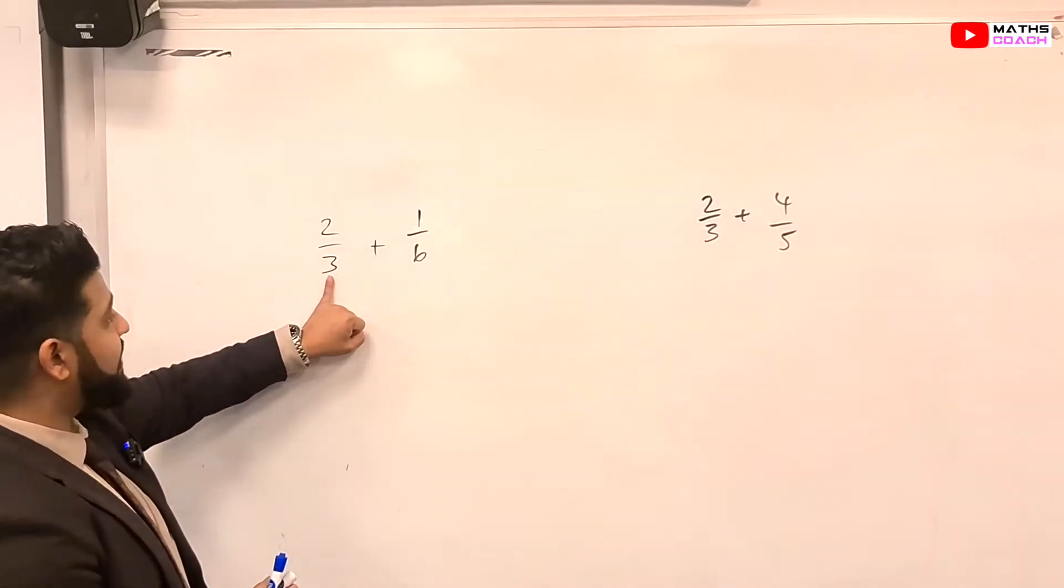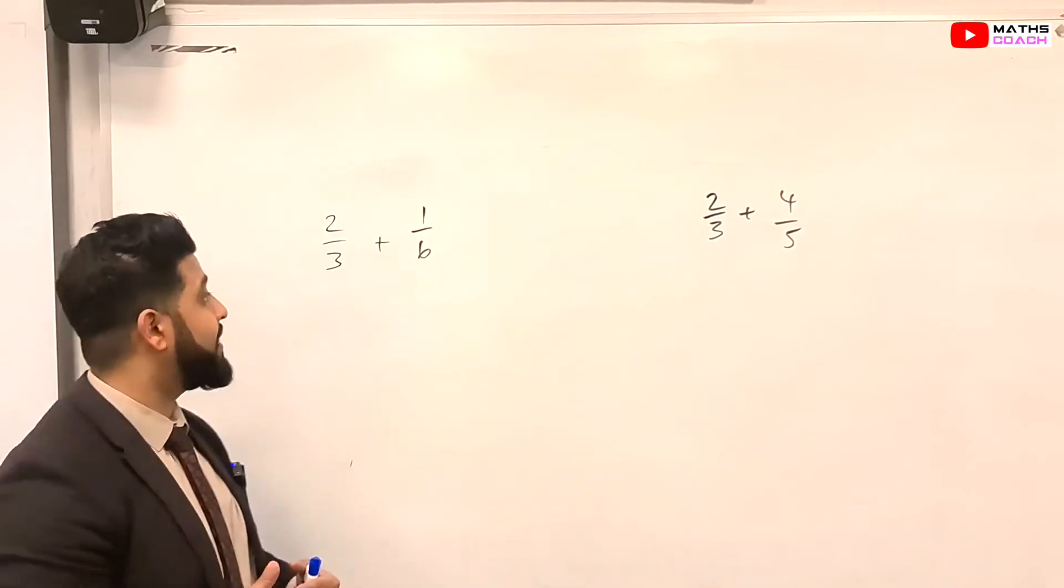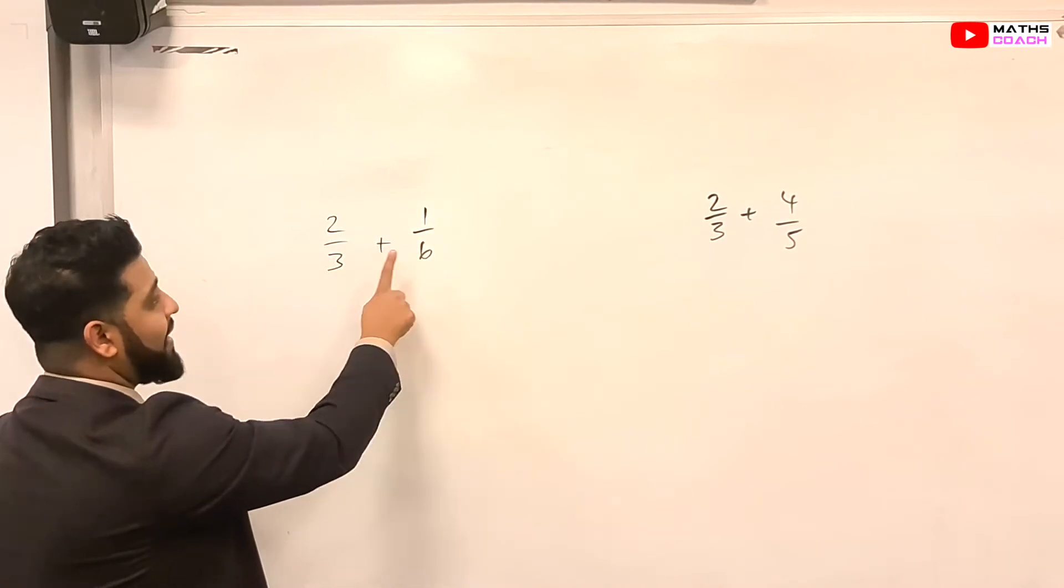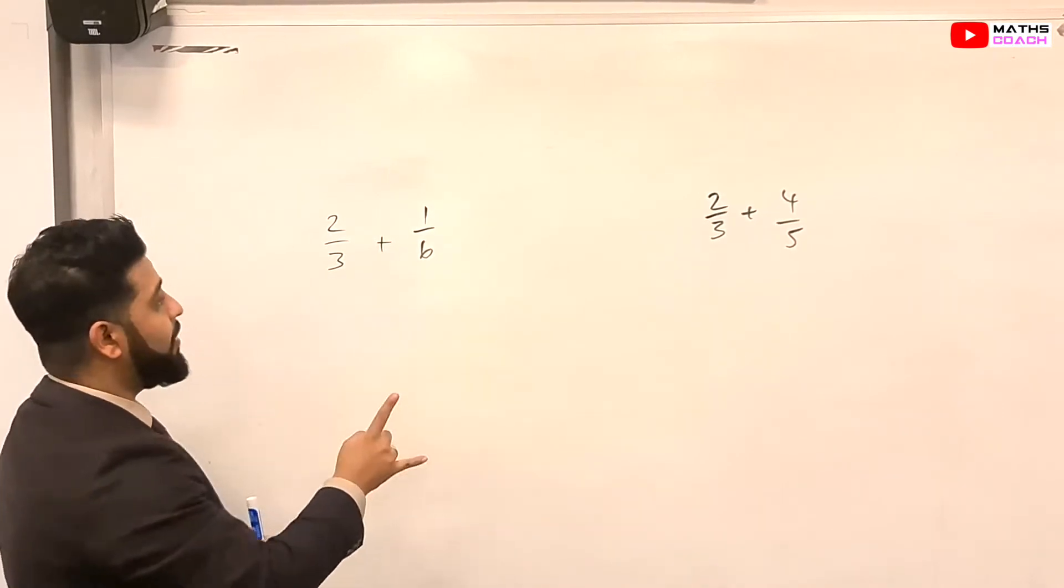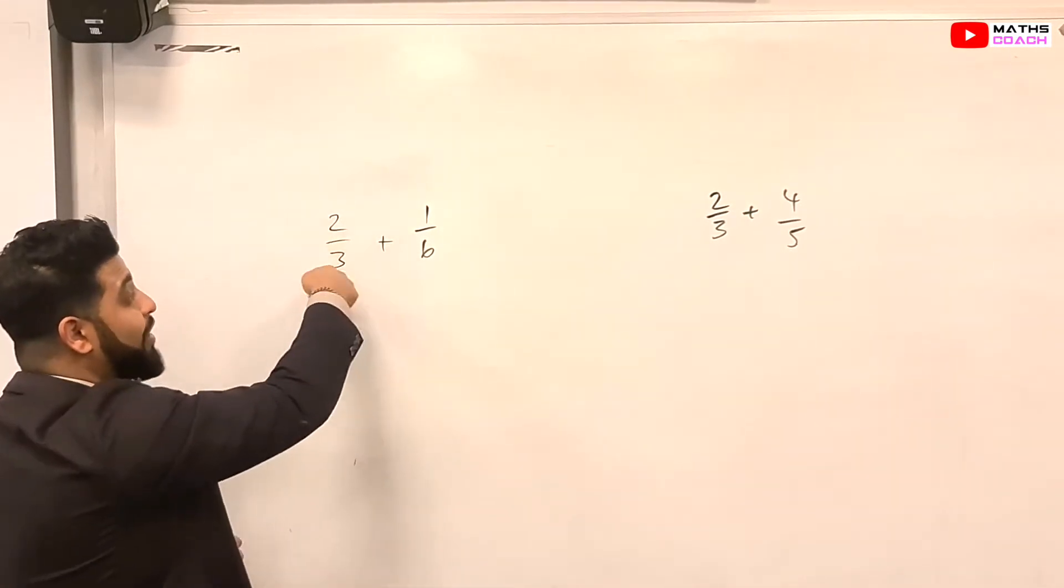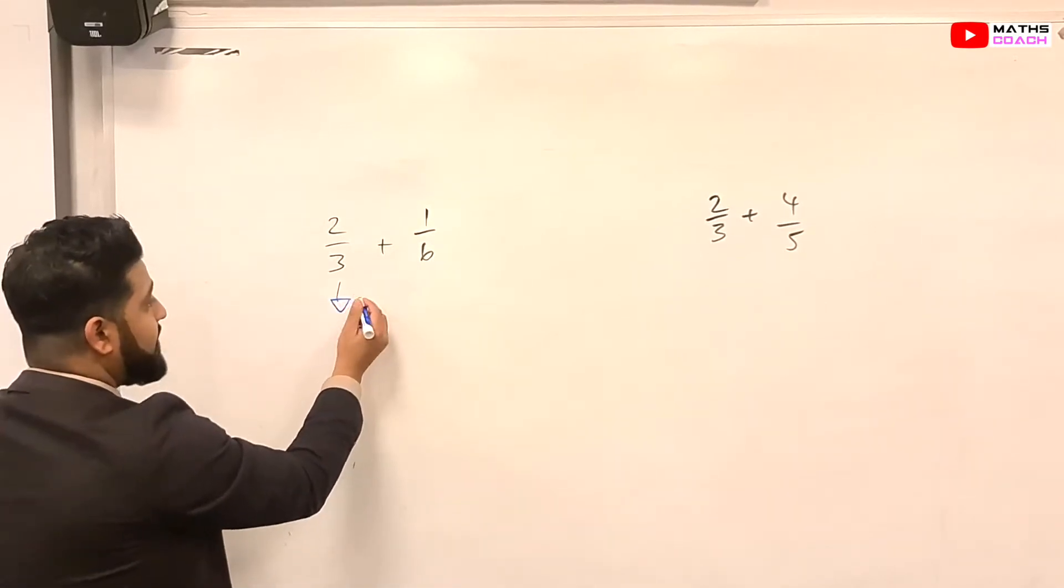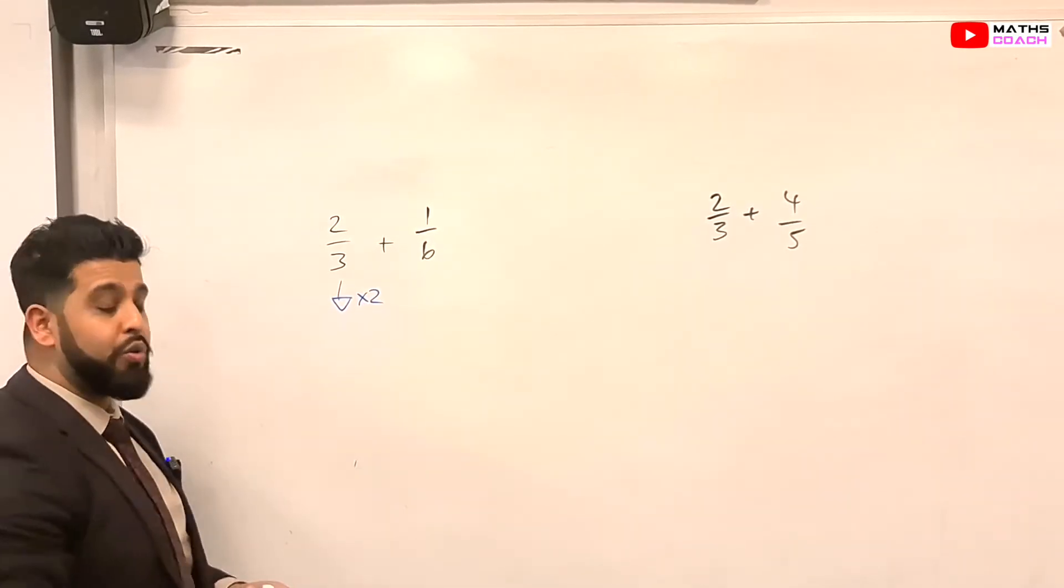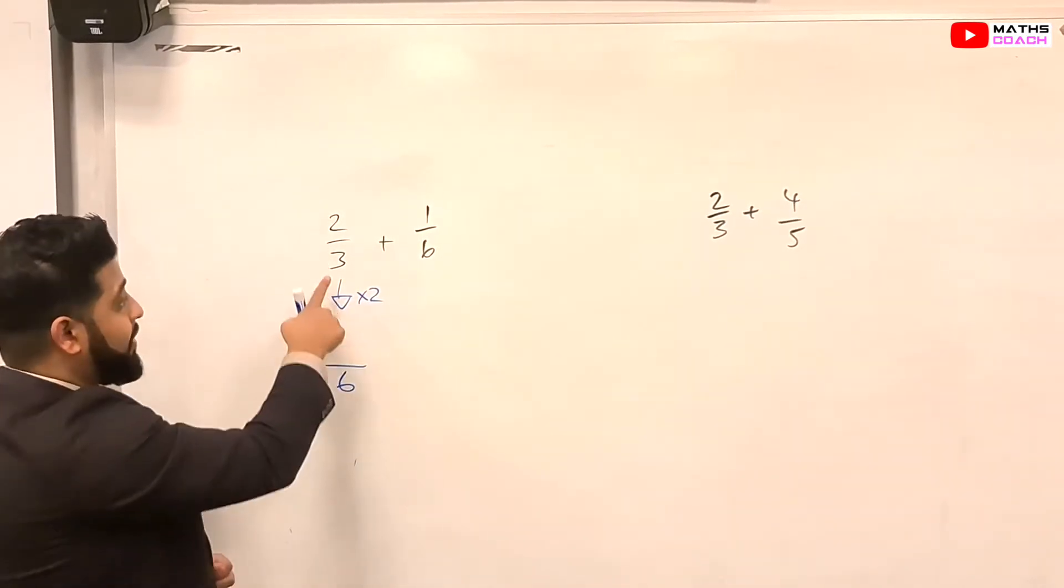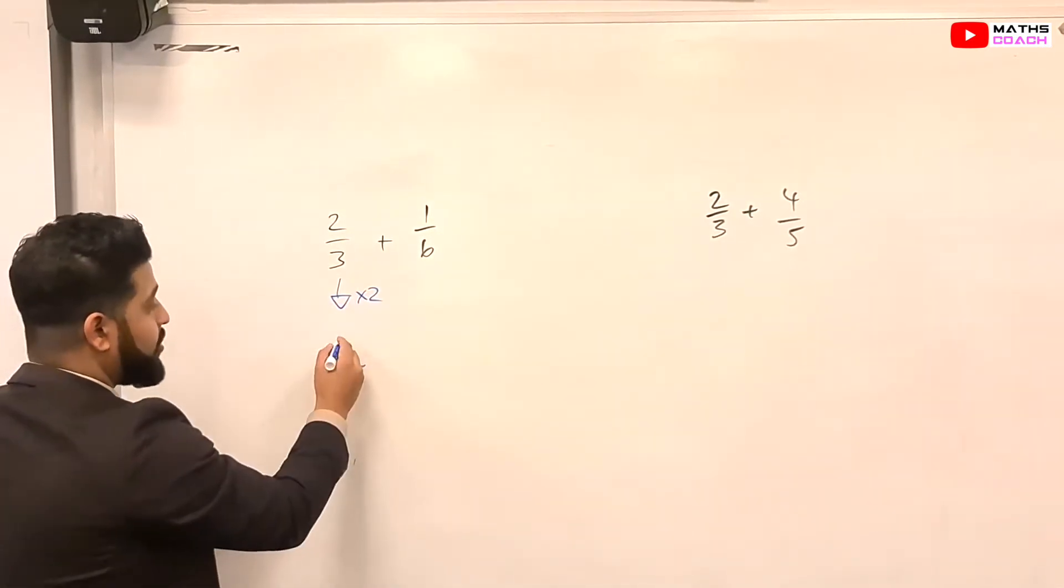So we have a denominator of 3 here and 6 here. So we want to have a common denominator between them. So we can look at the 3 and say, right, 3 and 6, they have something in common, which is 3. If you multiply that by 2, it will become 6. So you can bring out the equivalent fraction of this first fraction here by multiplying this by 2. So if you multiply this whole thing by 2, you get a denominator of 6 because 3 times 2 is 6. And you also have to multiply the numerator by 2, so you get 4.